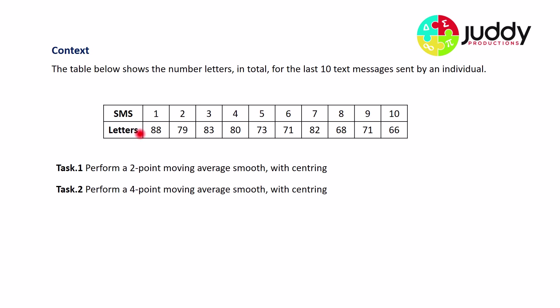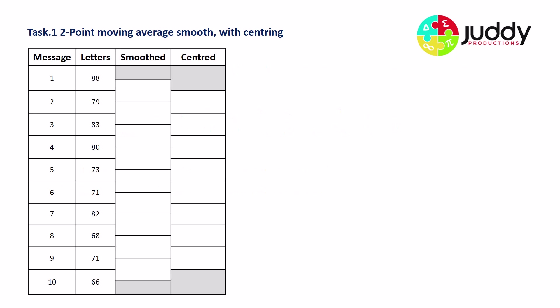The first SMS has 88 letters right through to the 10th SMS which has 66 letters. We have two tasks: task one is to perform a two-point moving average smooth with centering, and task two is to perform a four-point moving average smooth with centering. Average smooths are also called mean smoothing.